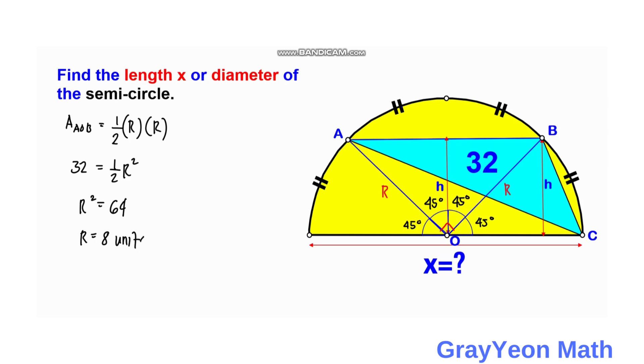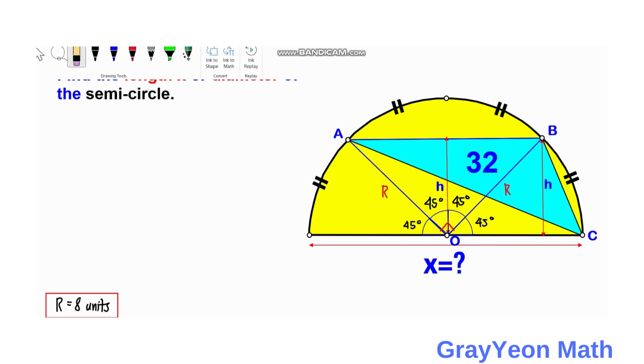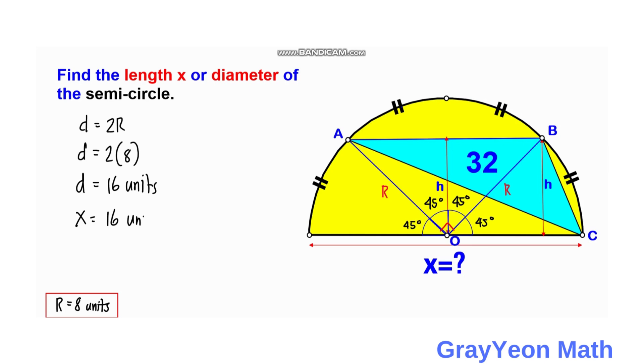Now for the final step, since we already know the radius, diameter will just simply be twice the radius. So D equals 2 times 8, so D equals 16 units. Or since D equals X, X equals 16 units, and that is our answer.